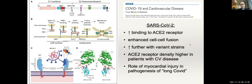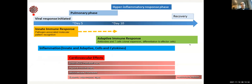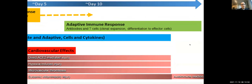Another important point is the role of myocardial injury in the pathogenesis of long COVID. Several CMR studies have shown persistence of myocardial abnormalities for months after infection. As of April this year, there are still more questions than answers regarding the cardiovascular effects — whether mediated through direct ACE2 receptor effects, hypoxia-induced injury, microvascular thrombosis, or general inflammation. There is also evidence of dysregulatory autoimmune reactions in some patients.